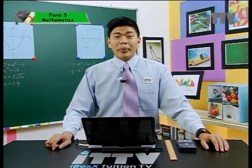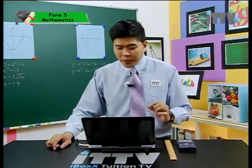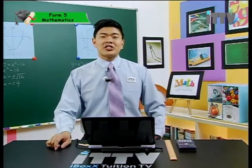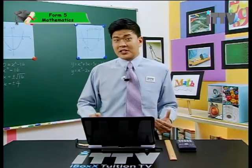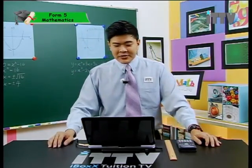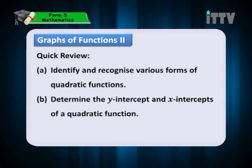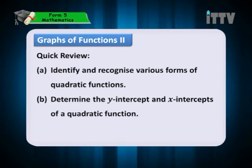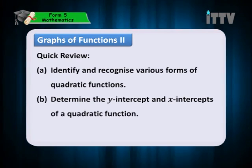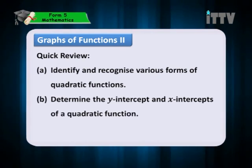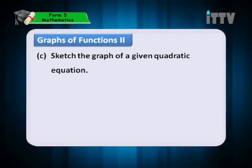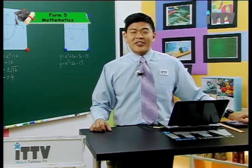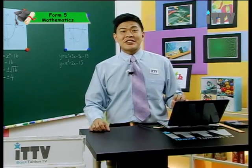Let's take a look back at what we have learned in this lesson. We have learned about the quadratic function, which adds to the knowledge of linear functions from the previous lesson — so we have now learned two types. What we have learned is: firstly, identify and recognize various forms of quadratic function; secondly, determine the y-intercept and x-intercepts of a quadratic function; and lastly, how to sketch the graph of a given quadratic equation. That's it for this lesson — see you for more functions in the next lesson.